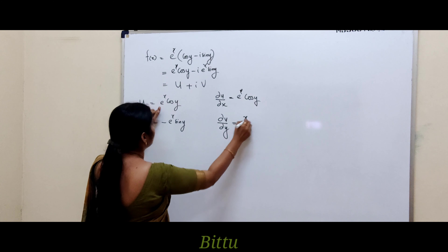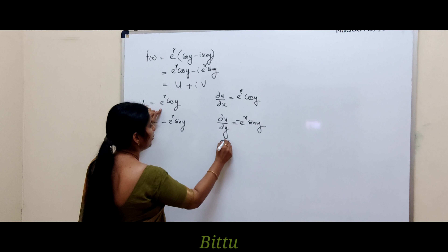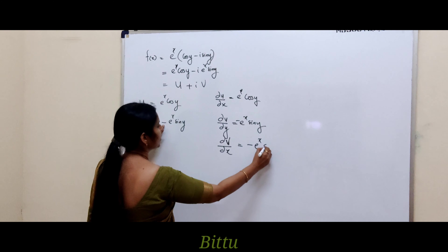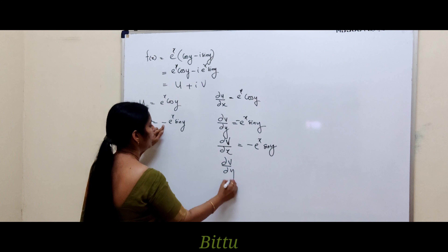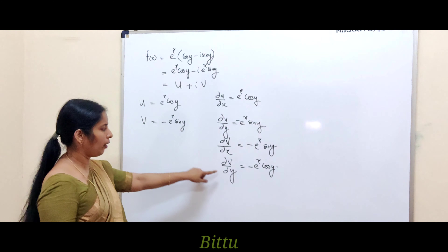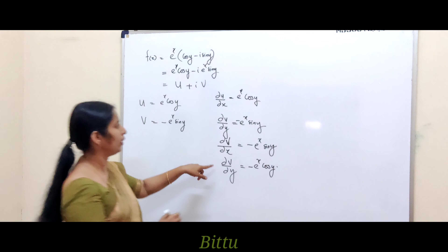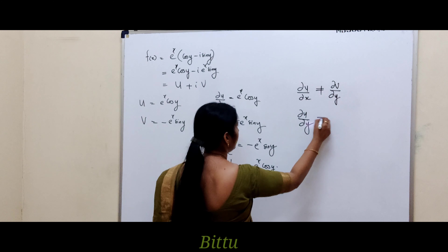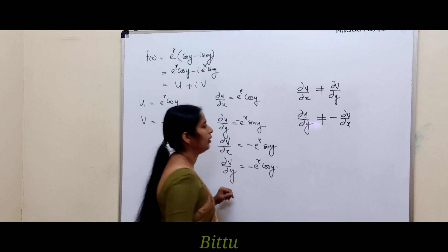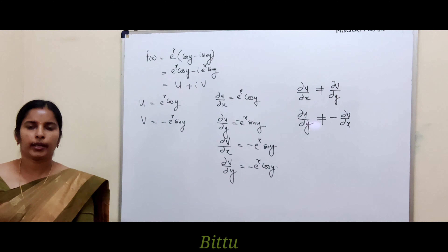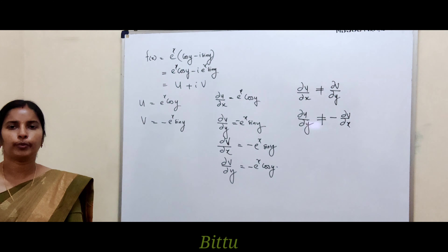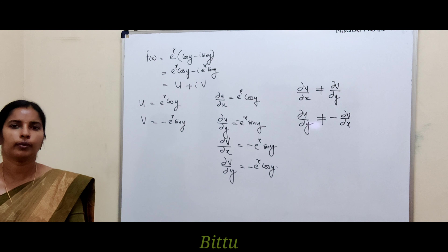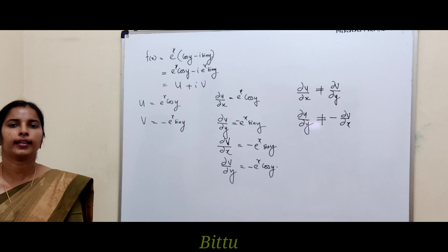We compute: ∂u/∂x = e^x cos y, ∂u/∂y = −e^x sin y, ∂v/∂x = −e^x sin y, and ∂v/∂y can be checked similarly. Here ∂u/∂x is not equal to ∂v/∂y, and ∂u/∂y is not equal to −∂v/∂x. The Cauchy-Riemann equations are not satisfied by u and v — if at least one equation is not satisfied, f is not analytic. Here both equations are not satisfied, so f is not analytic.